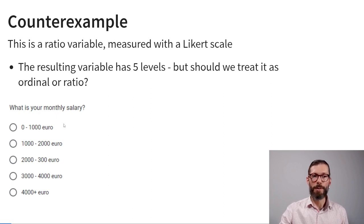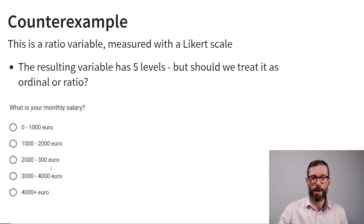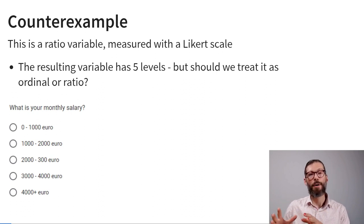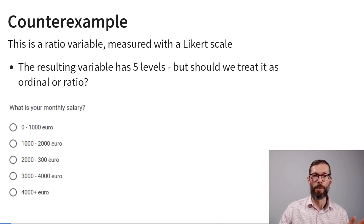We ask participants: what is your monthly salary? They can select one of five response options: 0–1,000 euros; 1,000–2,000 euros; 2,000–3,000 euros; 3,000–4,000 euros; and more than 4,000 euros. Even though the variable has a ratio measurement level, because we measured it with a Likert scale, we only have ordinal measurement level data about this ratio variable.